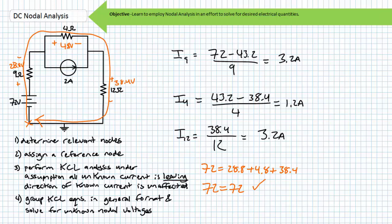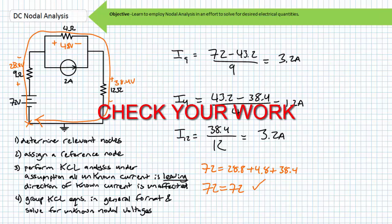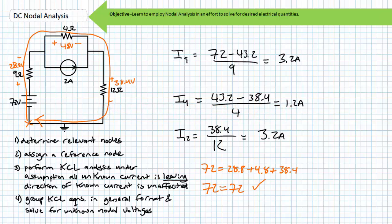If you had issues with this example problem, take the time to revisit it and correct any misconceptions. Very often it is not the electrical concepts but rather the algebraic manipulations and proper use of the scientific calculator that trips students up when employing nodal analysis for the first time. A misplaced positive or negative sign can have disastrous consequences. Perform the KCL analysis at each relevant node carefully, accounting for the direction of unknown current. Take your time algebraically manipulating the equations into recommended format, enter matrices carefully, and always treat results as suspect until verified by KCL or KVL.